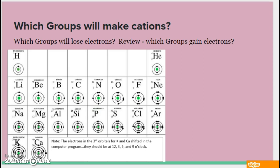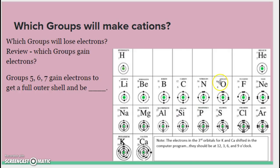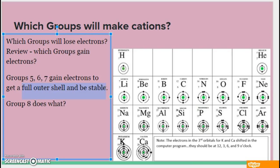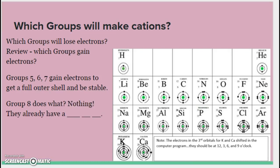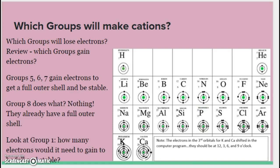Which groups will lose electrons? First let's review. Which groups were going to gain the electrons? Which ones almost had a full outer shell? They just needed a few more. Well, that was groups 5, 6, and 7. They gain electrons to get a full outer shell and be stable. Remember, that's a huge sentence. You want a full outer shell to be stable. What does group 8 do? What was the name for group 8 again? Oh yes, the noble gases. So what do the noble gases do? Nothing! They're rich. They don't need to do anything. And the real reason, of course, is because they already have a full outer shell.